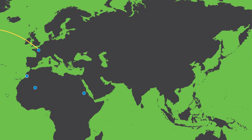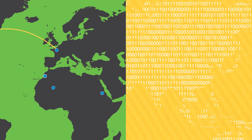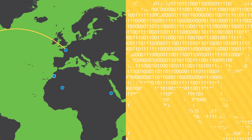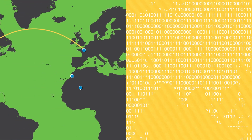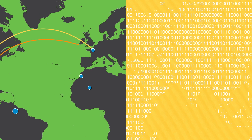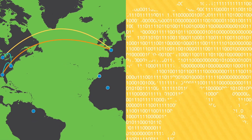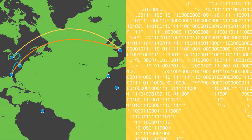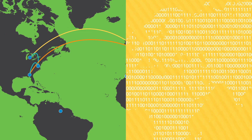Data mapping and data inventories are critical components of any privacy program, as they allow companies to secure their data and analyze risks associated with sensitive data.